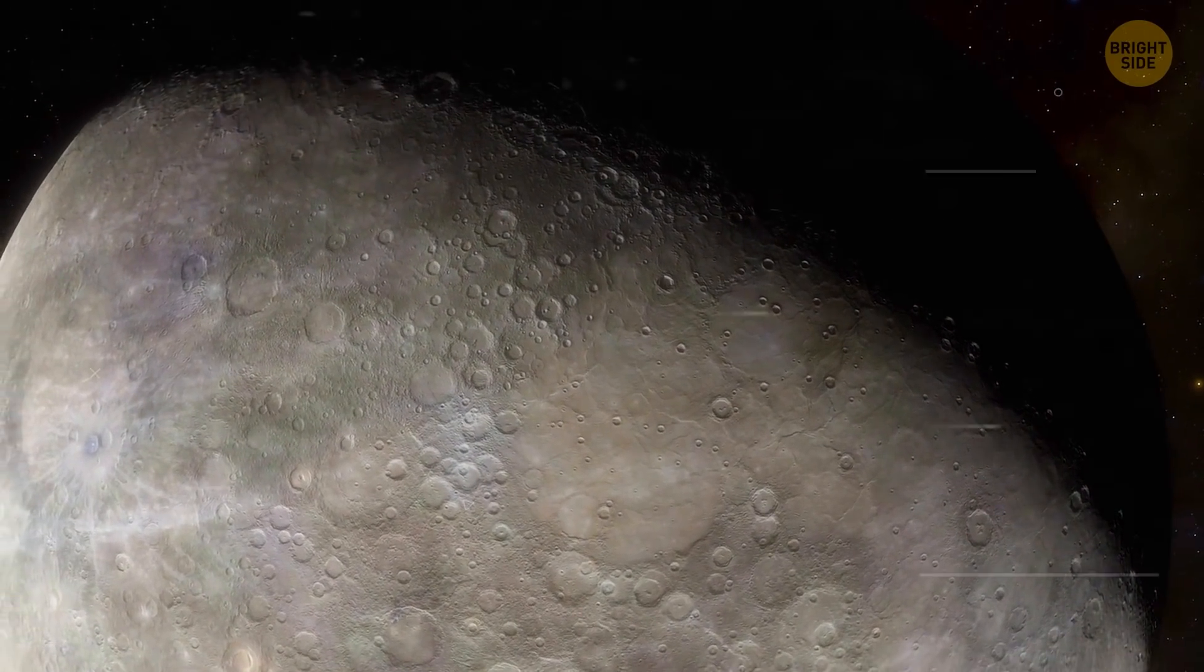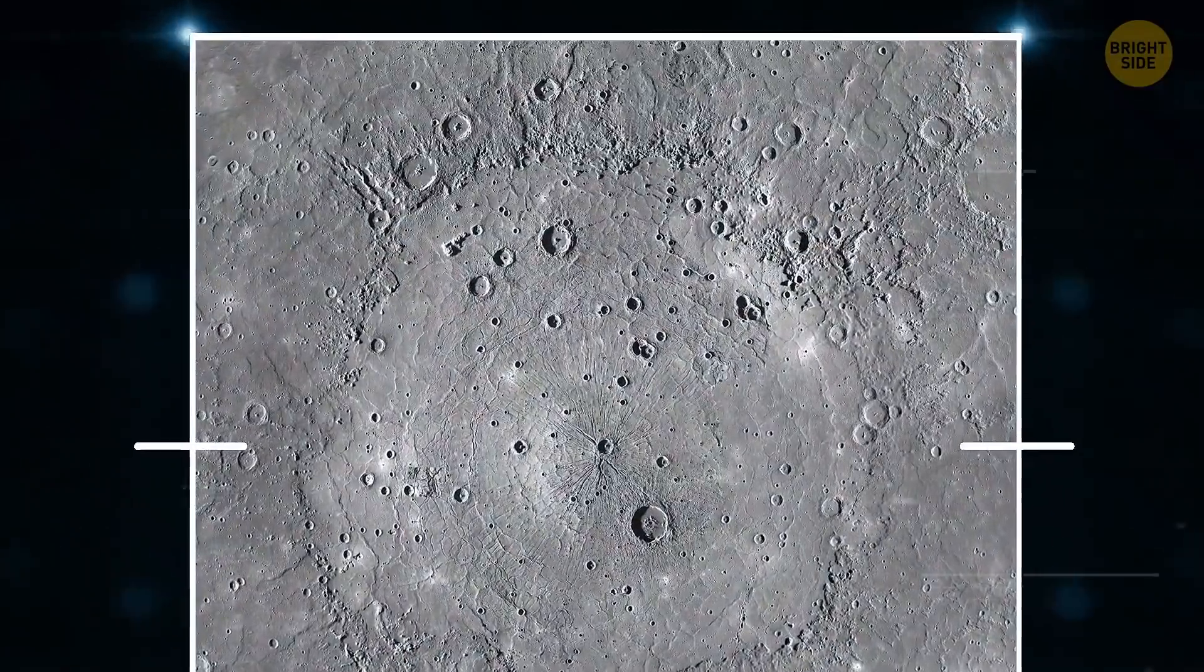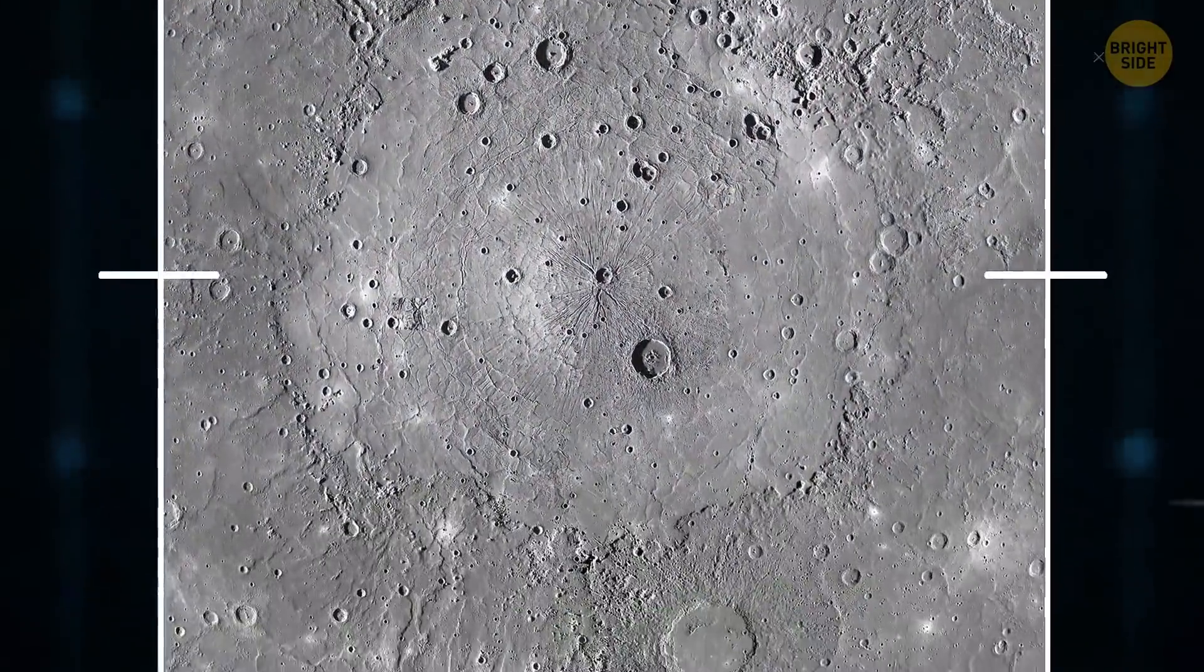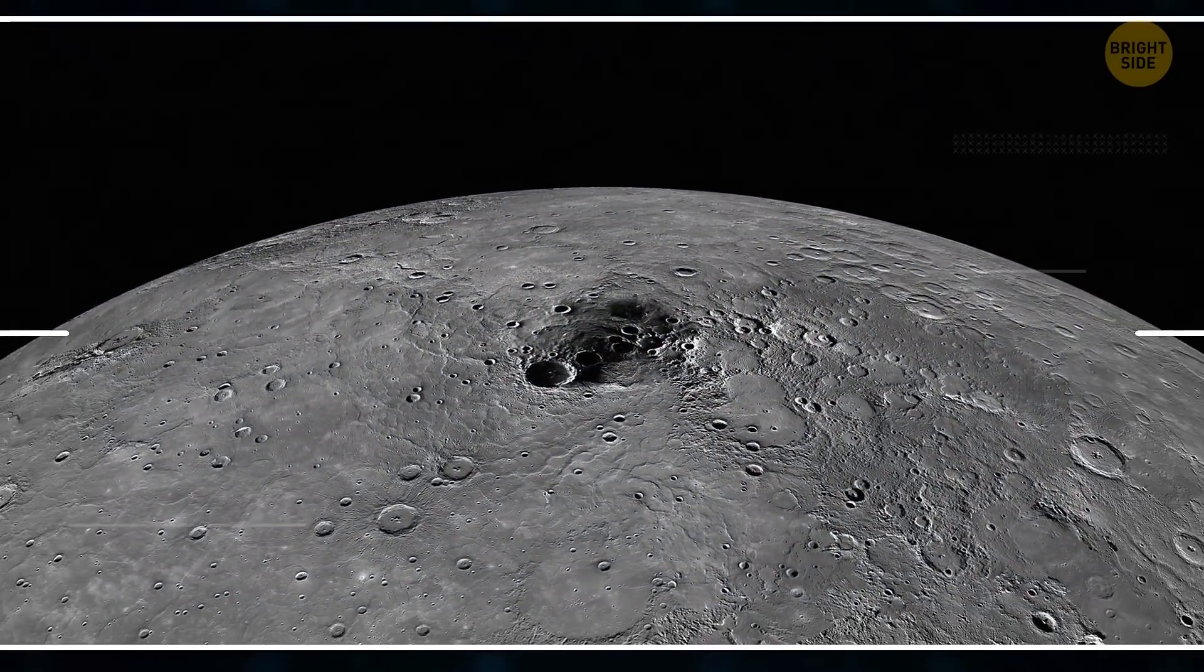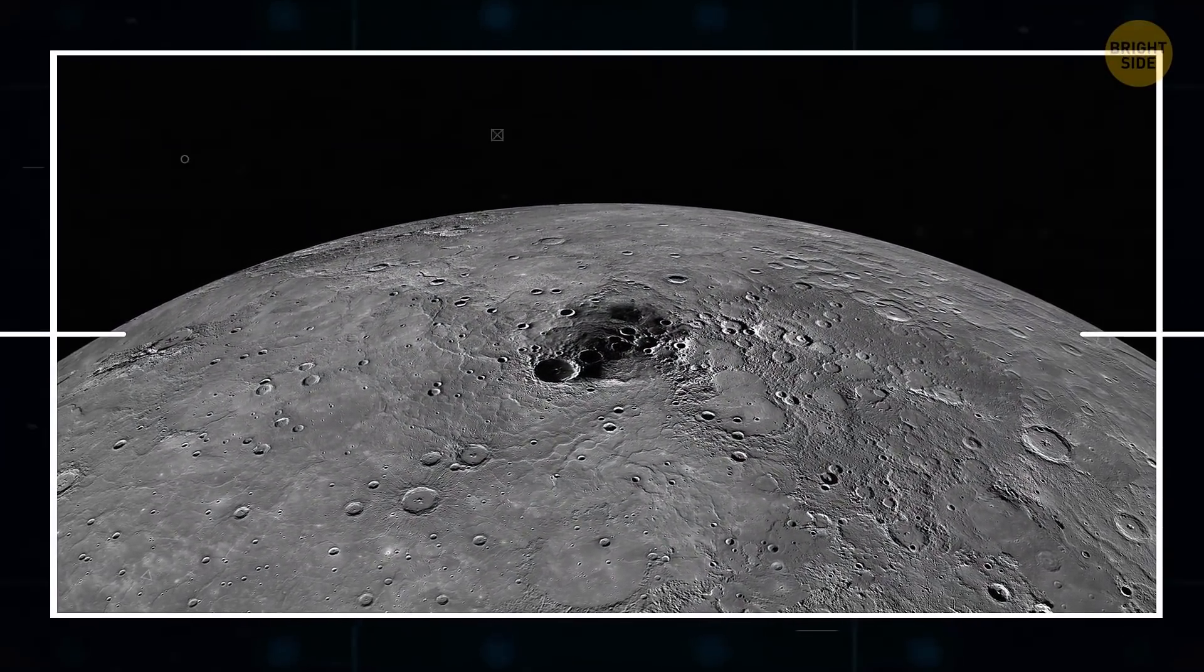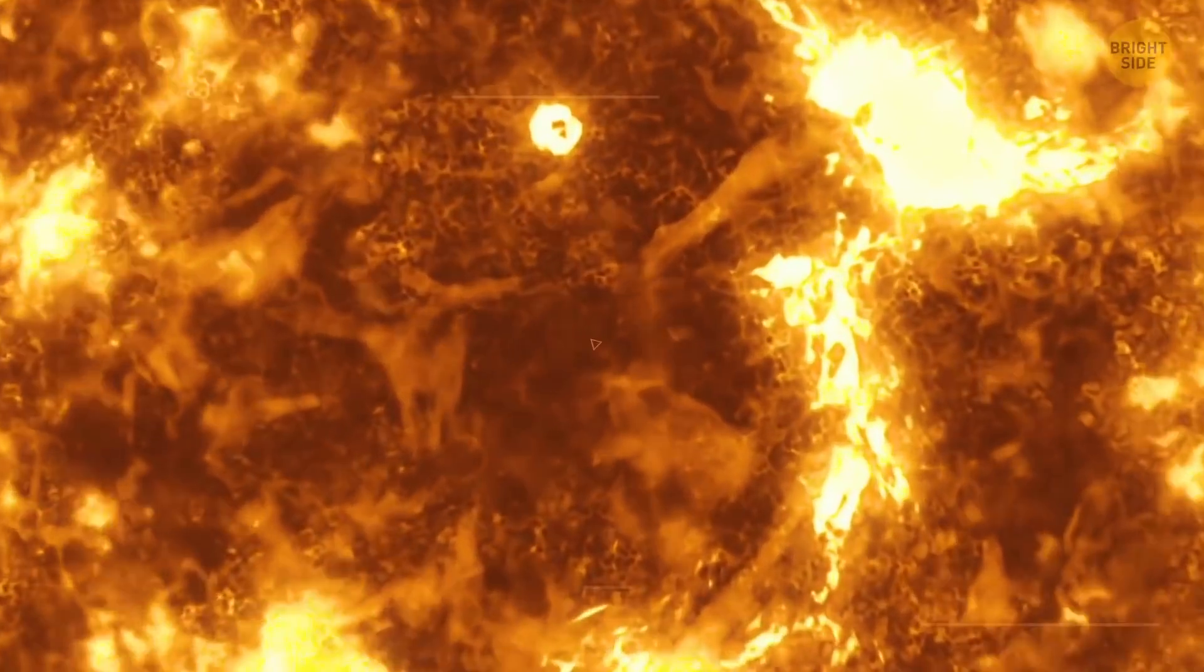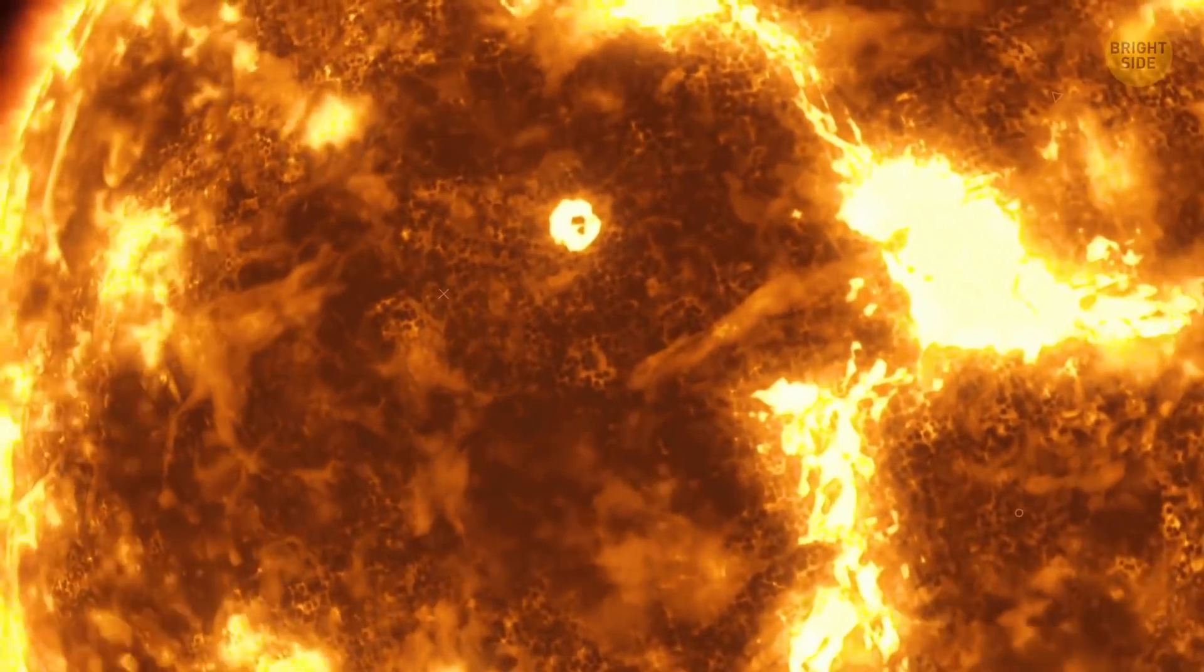What Mercury does have is wrinkles. Its iron core cooled and shrank, causing the surface to contract too, and leaving all those wrinkles. That, or because it's so close to the Sun with no SPF. Hehe, maybe...